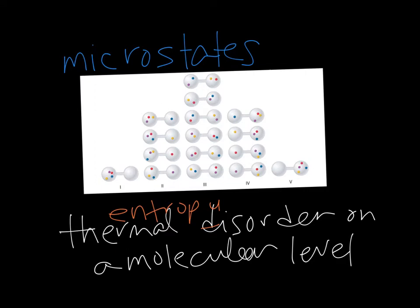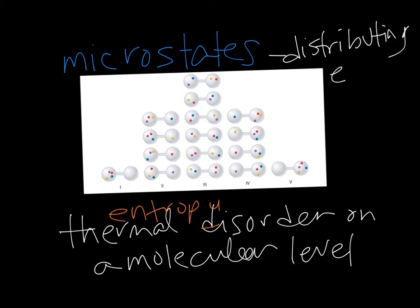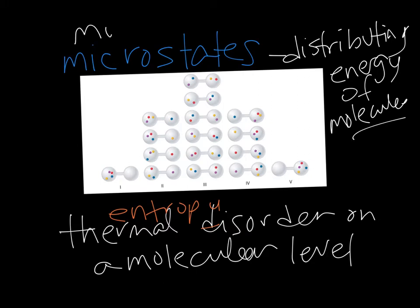That idea is going to be helpful in understanding entropy and which things have more or less entropy, because the more microstates — or ways of being — that molecules can have, the more ways they can distribute their energy. By putting them in different places, you're distributing the energy of the molecules differently. The more microstates you have for their energy, the more entropy you have.